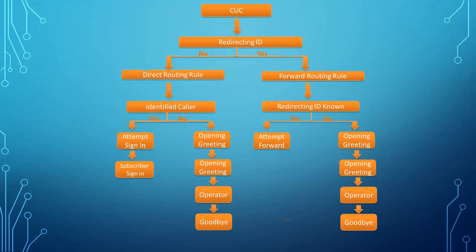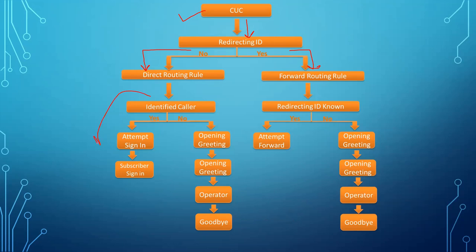Now let me explain this with a flow chart. In Cisco Unity Connection, if an incoming call has a redirecting ID it goes to the forward routing rule; if it has no redirecting ID it hits the direct routing rule. Under the direct routing rule, if the caller is identifiable — present in Unity Connection or CUCM — it will prompt attempt sign-in. You enter your PIN and reach the subscriber sign-in. If the caller is not identifiable, it goes to the opening greeting call handler.